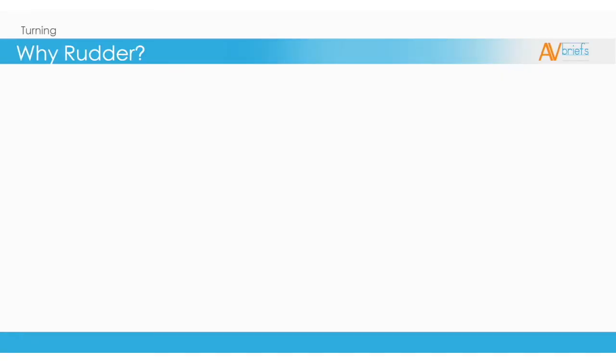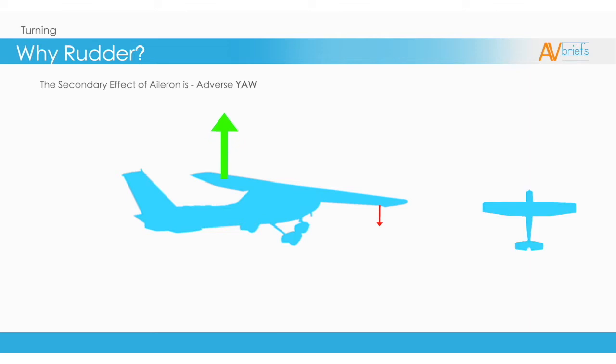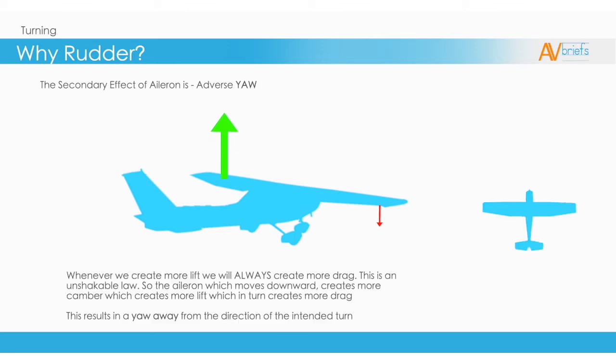We have looked at rudder in previous lessons. You will be aware now that the rudder is used due to the secondary effect of ailerons, which is adverse yaw. Whenever we create more lift, we will always create more drag.